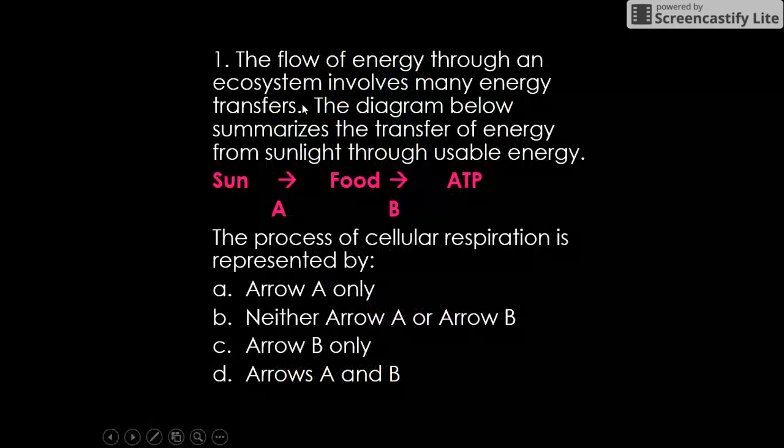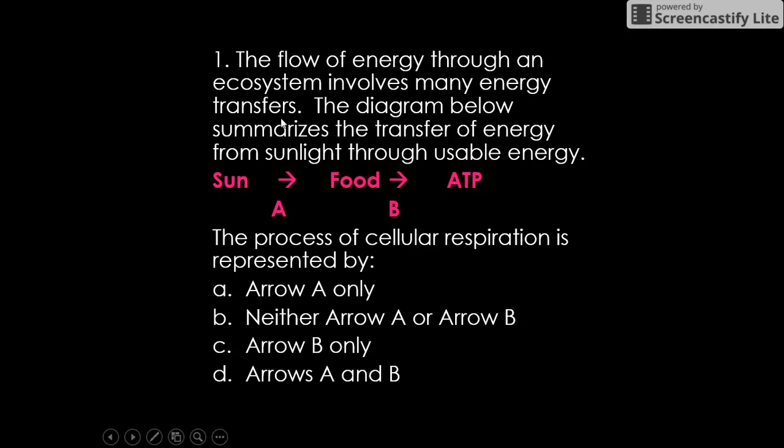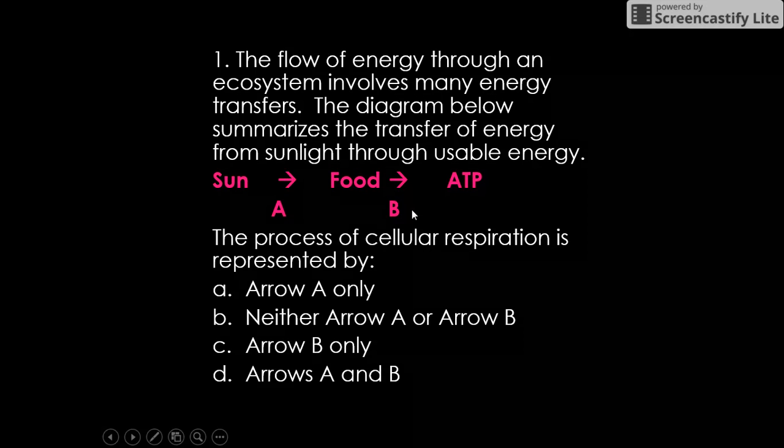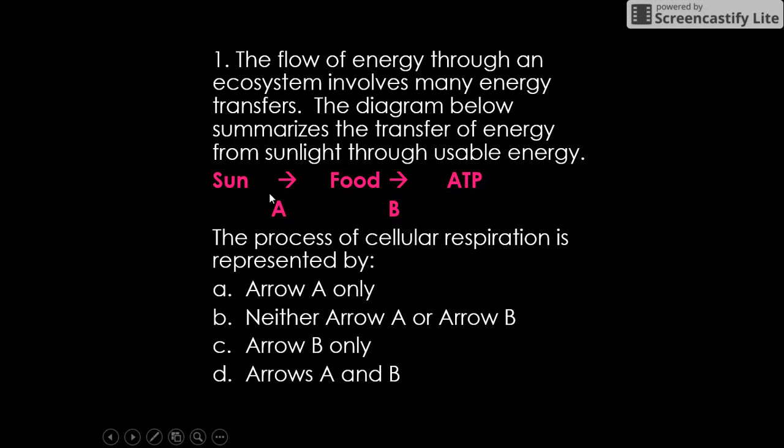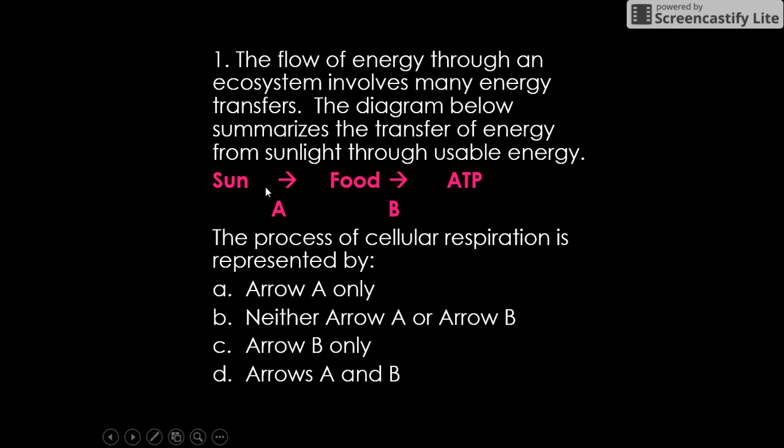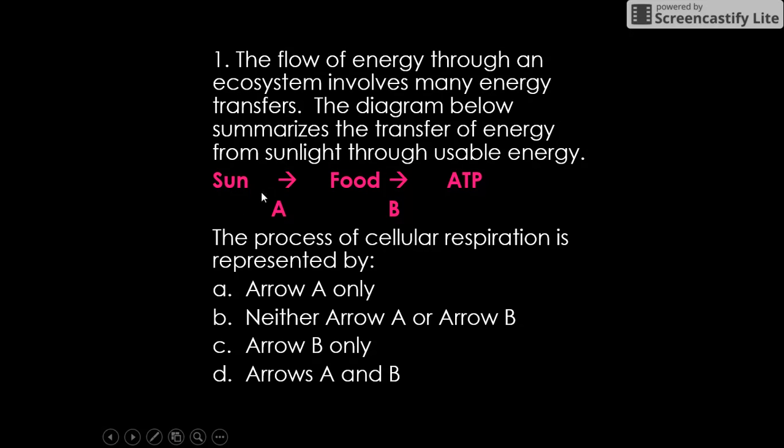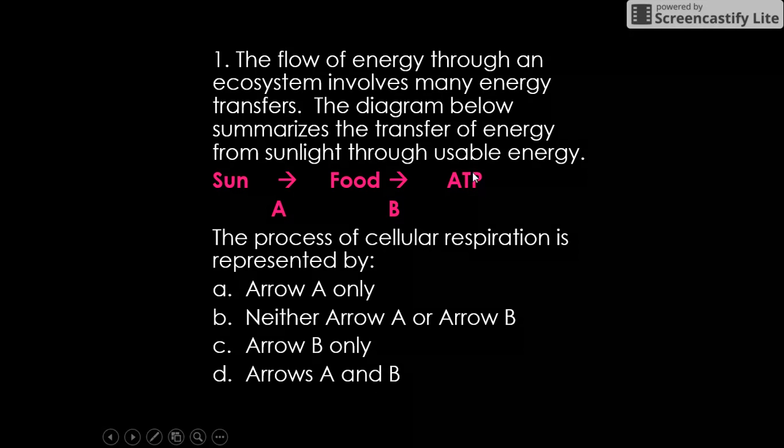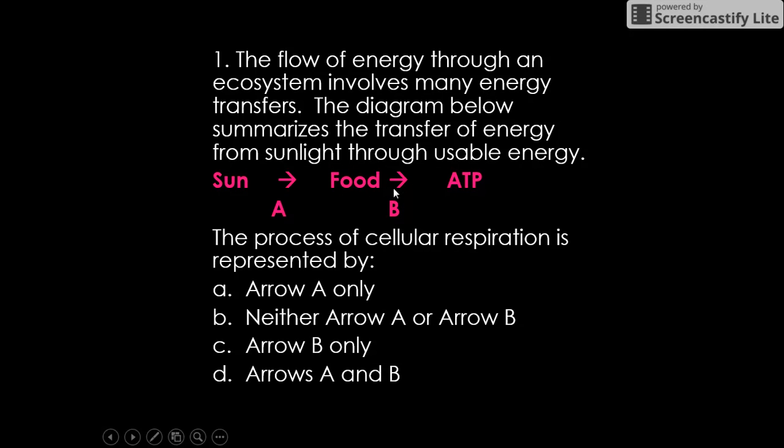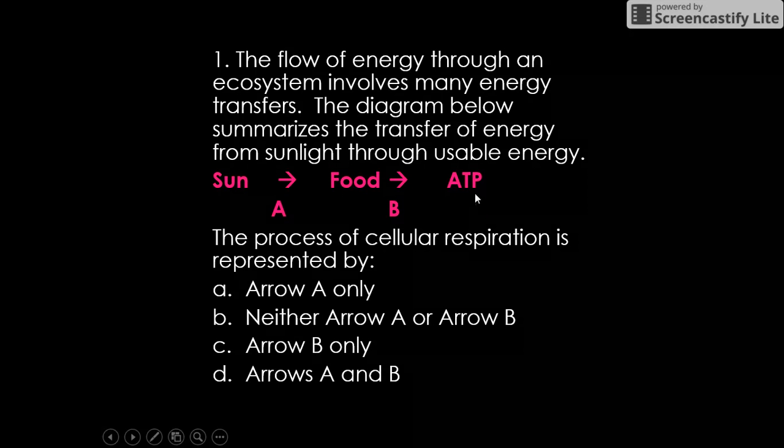Number one: the flow of energy through an ecosystem involves many energy transfers. The diagram below summarizes the transfer of energy from sunlight through usable energy. So we have sun—we know that animals can't use sun directly; we have to eat in order to use that energy. We want to know what process cellular respiration is represented by. So sun we know goes into plants first; animals can't use it right away. Which one would generate ATP? Cellular respiration is the only process that generates ATP, so the arrow that represents it must be arrow B because that's the one pointing to making ATP.